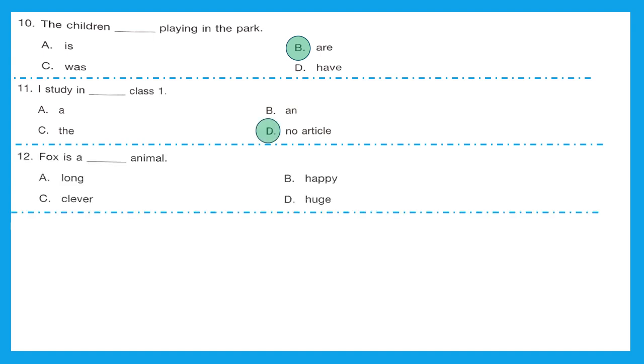Question 12, fox is a dash animal. Here we have to select the suitable adjective. What kind of animal is fox? Long, happy, clever or huge? The right adjective is clever. Fox is a clever animal. Option C is the right answer.